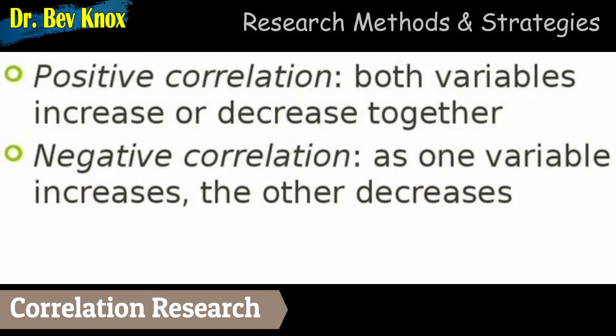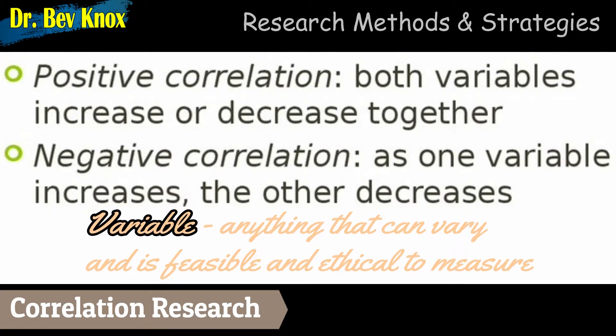A positive correlation indicates that as the value of one variable increases, we can predict that the value of the other variable will also increase. In contrast, a negative correlation tells us that as the value of one variable increases, the value of the other decreases. Of course, it is quite possible that little or no relationship exists between two variables.